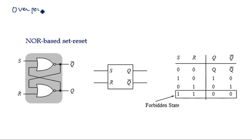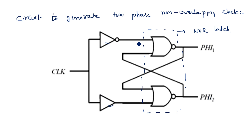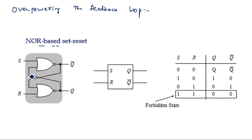Overpowering the feedback loop uses cross-coupled pairs — a NOR-based SR latch. In a NOR-based SR latch with set and reset inputs: when both inputs are zero, the output holds its previous state; when set equals one, Q is set to one; when reset equals one, Q is reset to zero. This is represented as an SR latch with two inputs S and R and outputs Q and Q-bar.